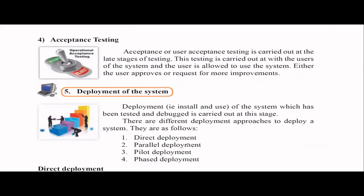The first three testing types are done by developers and QA or quality assurance engineers. But acceptance testing — also called user acceptance testing — is carried out by the end users themselves: the librarian, the students. They finally test it and check whether it's what they really want. Sometimes they ask for improvements or small changes. Only if the client or end user accepts it is it a successful delivery of a system.